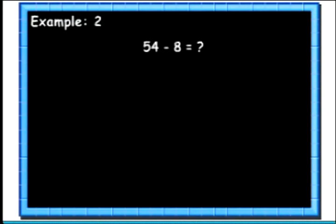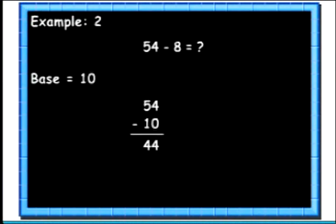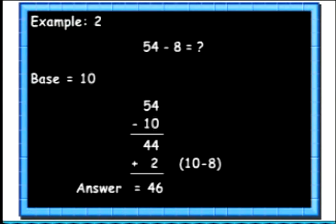Let's see another example. Here we want to know the difference of 54 and 8. Here we will take the base as 10. Then instead of subtracting 8 from 54, we will subtract 10. We get 44. Then we will add 10's complement of 8 to the result, which is 2. So we get the answer as 46.